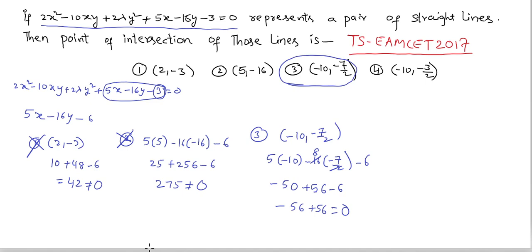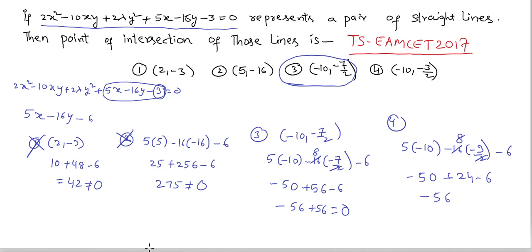Checking the fourth option: 5×(-10) - 16×(-3/2) - 6 = -50 + 24 - 6 = -32, which is not equal to zero. Fourth option is also wrong. For this problem, the third option is the correct answer: the point of intersection is (-10, -7/2).